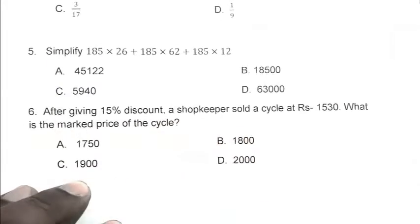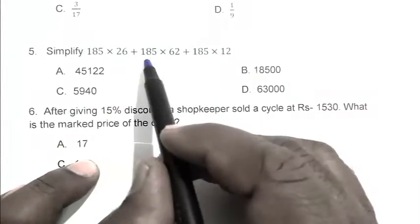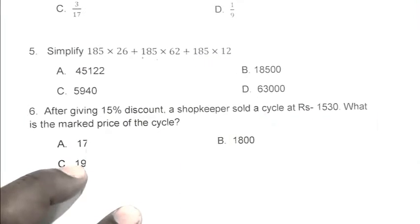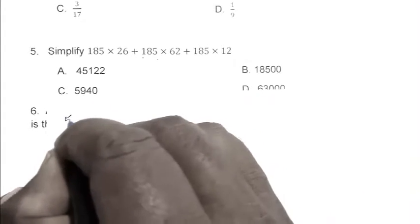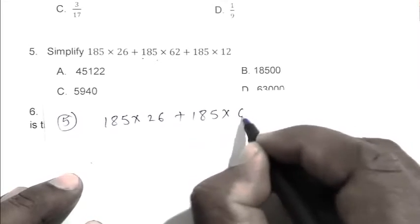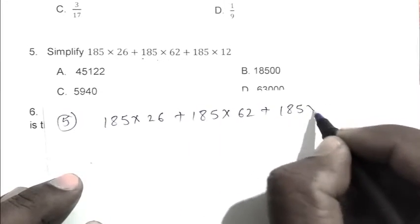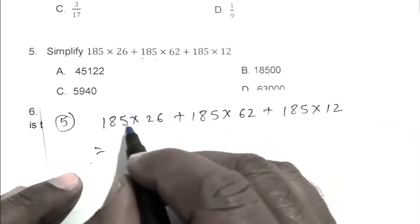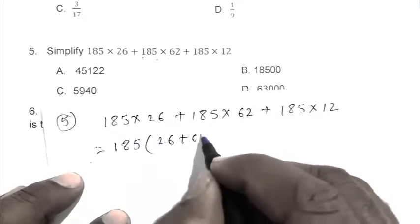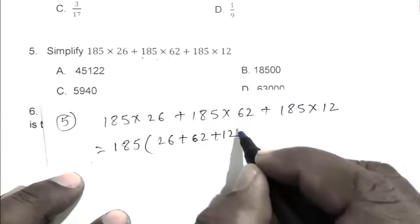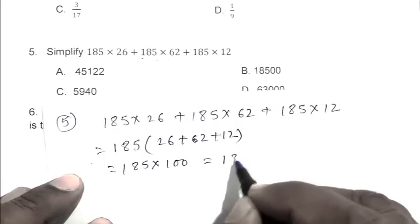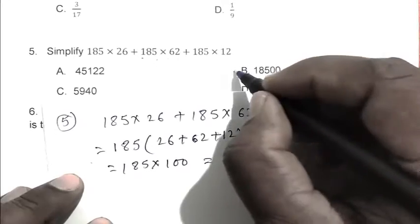Question number 5: Simplify 185 × 26 + 185 × 62 + 185 × 12. We can write this as 185 × (26 + 62 + 12). That is 185 × 100, which equals 18500. So B is the right answer.